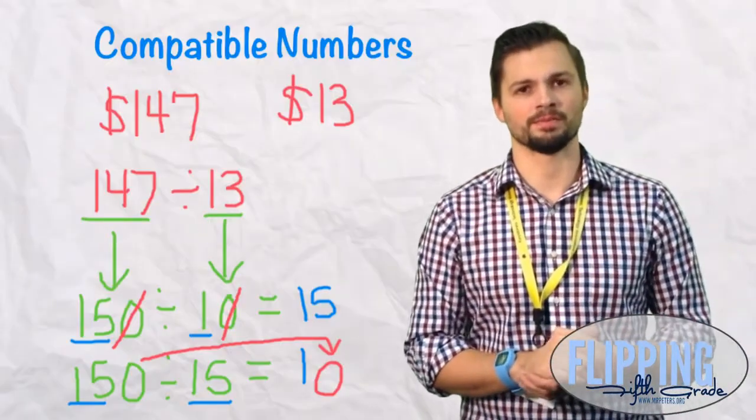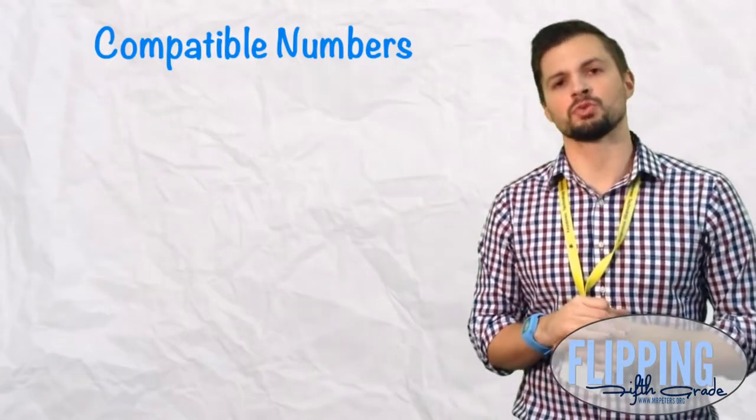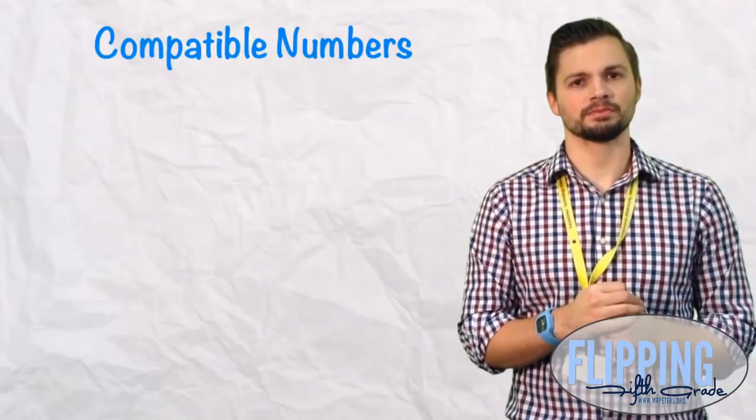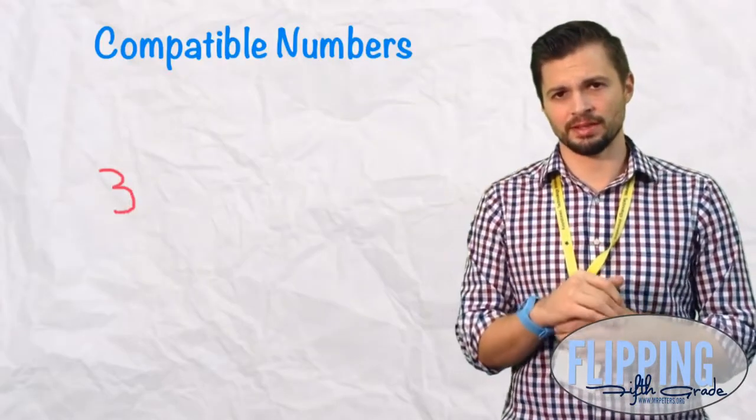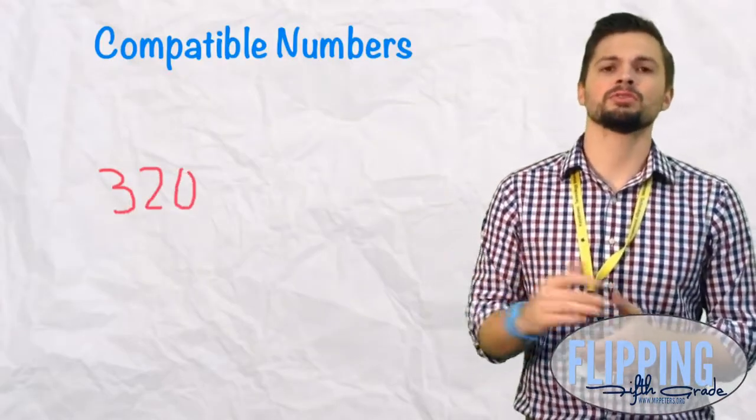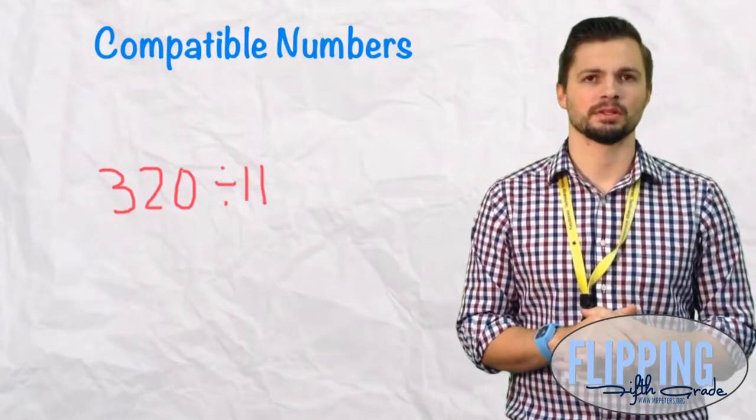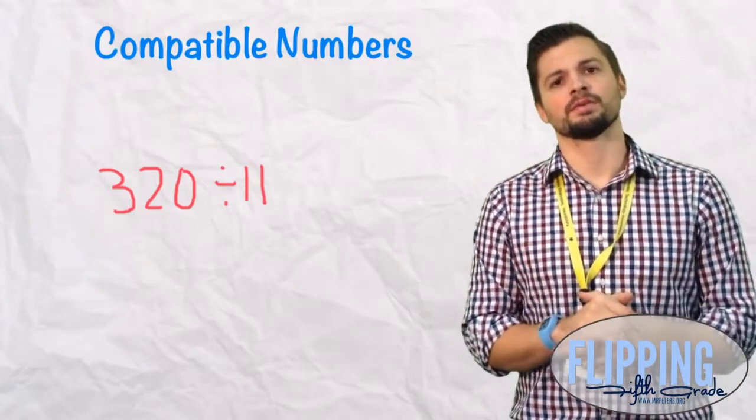Let's look at another problem. 320 divided by 11. So first let's go to that divisor. What's the number close to 11 that is easy to work with? 10.